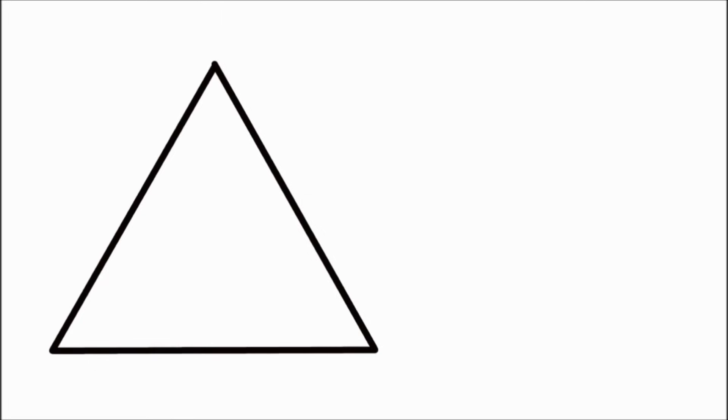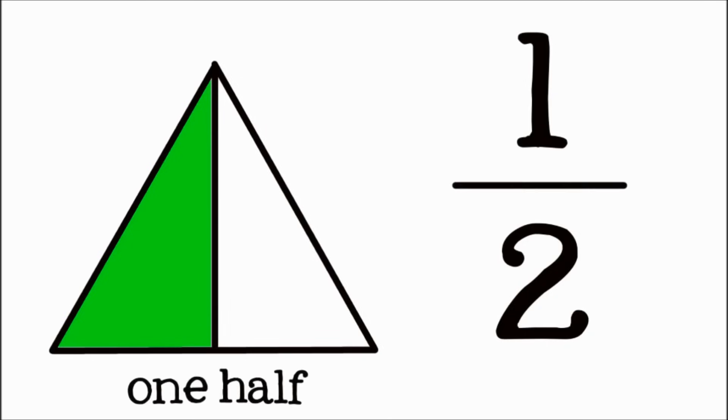When something is divided into two equal parts, we call them halves. One piece, out of two total pieces, is one half.